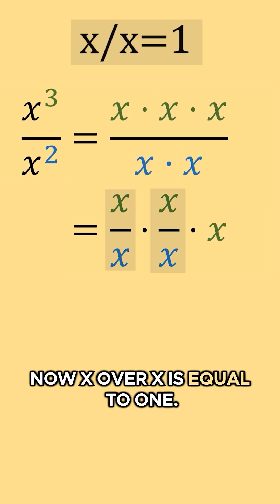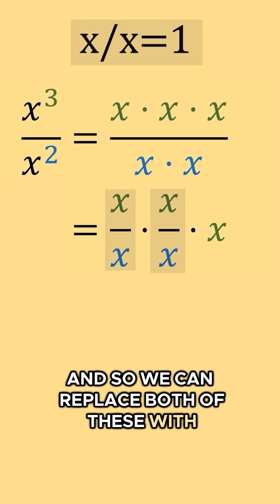Now, x over x is equal to one, and so we can replace both of these with one.